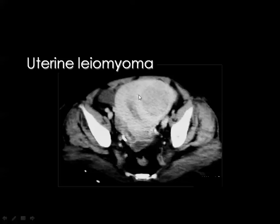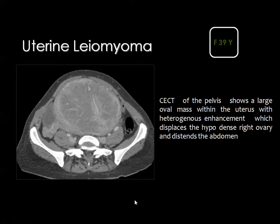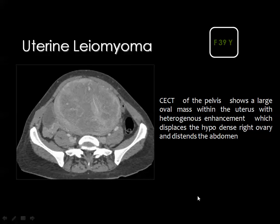Very large uterine fibroids may contain extensive dystrophic calcifications. Within the leiomyoma, hypodensities may be seen due to degenerative changes including cystic, hyaline, and fatty degeneration.